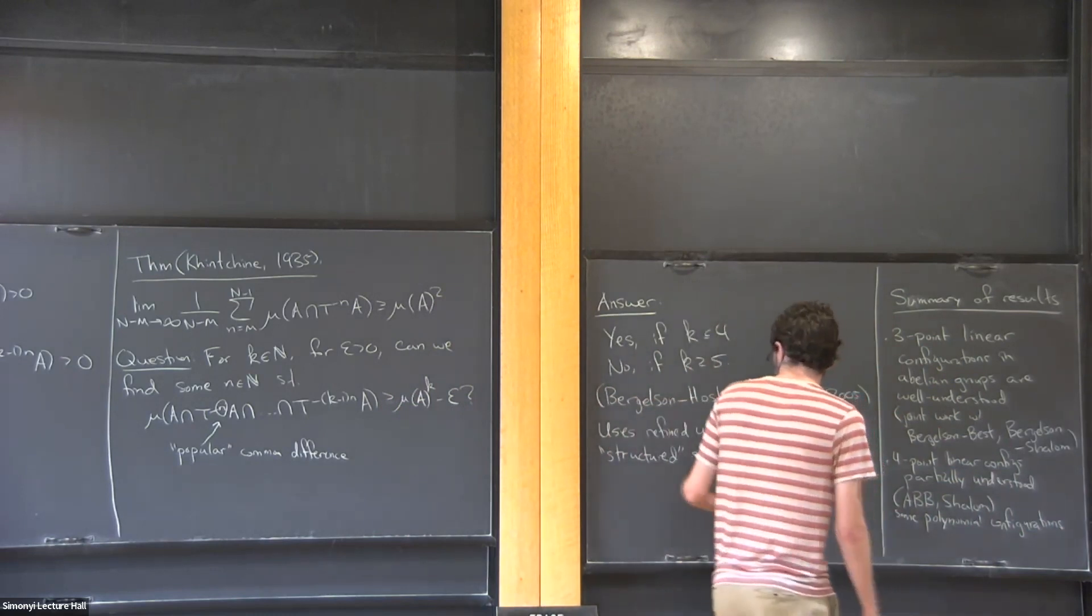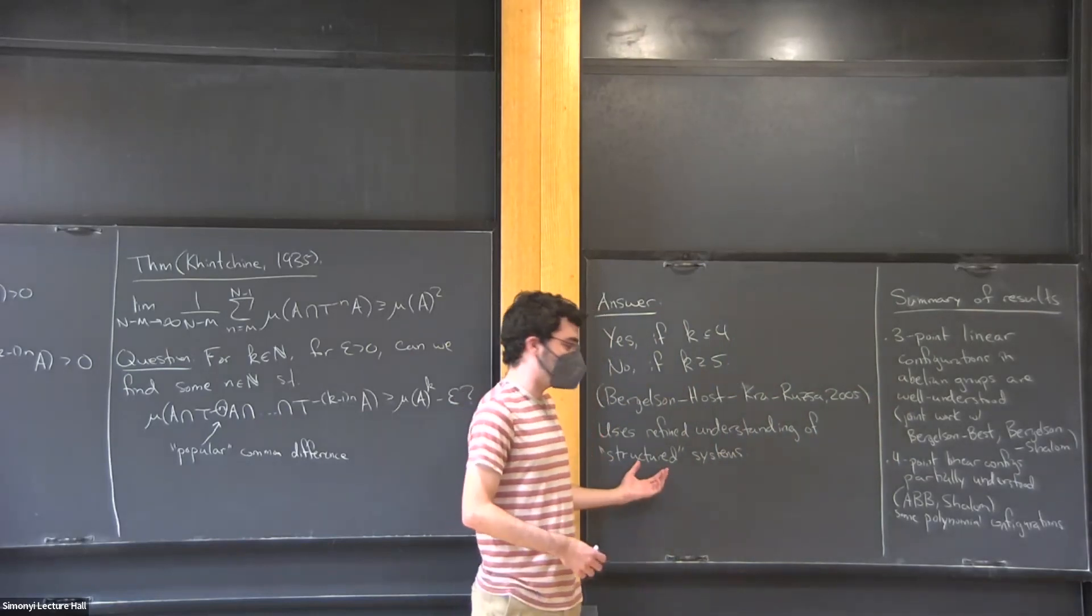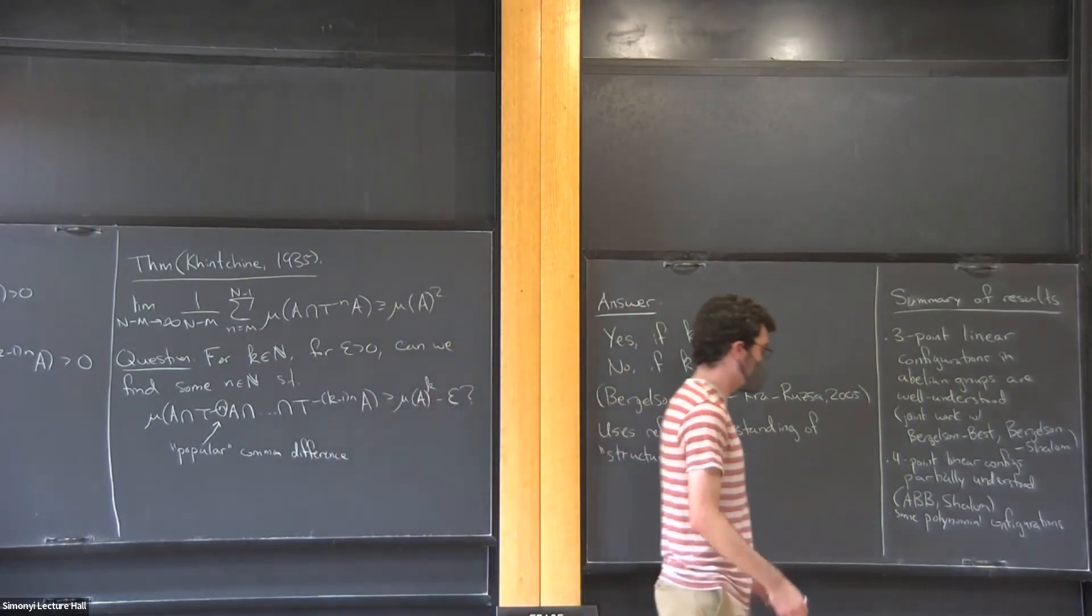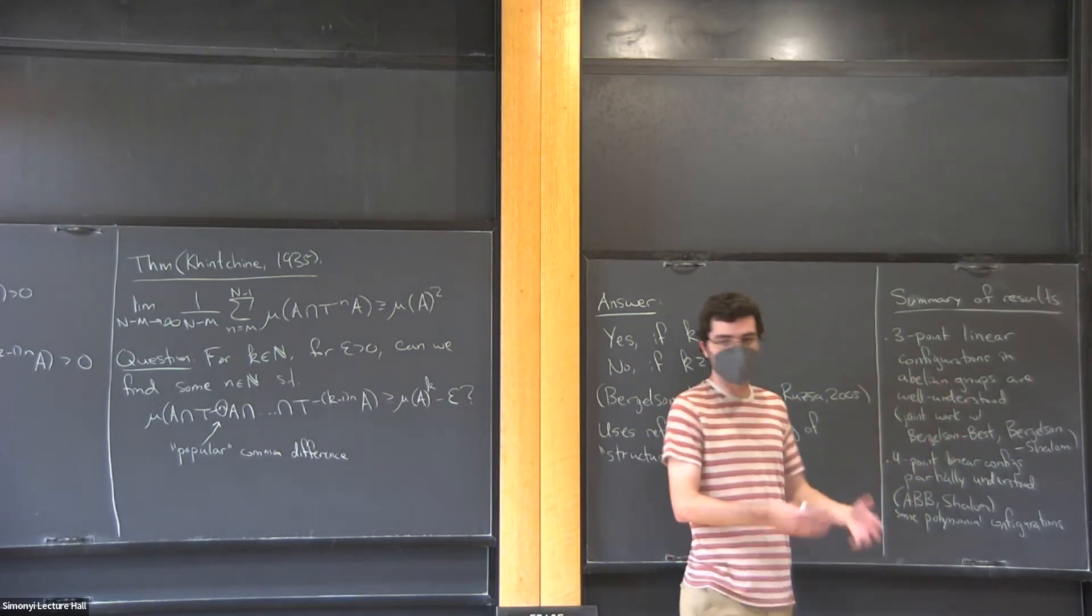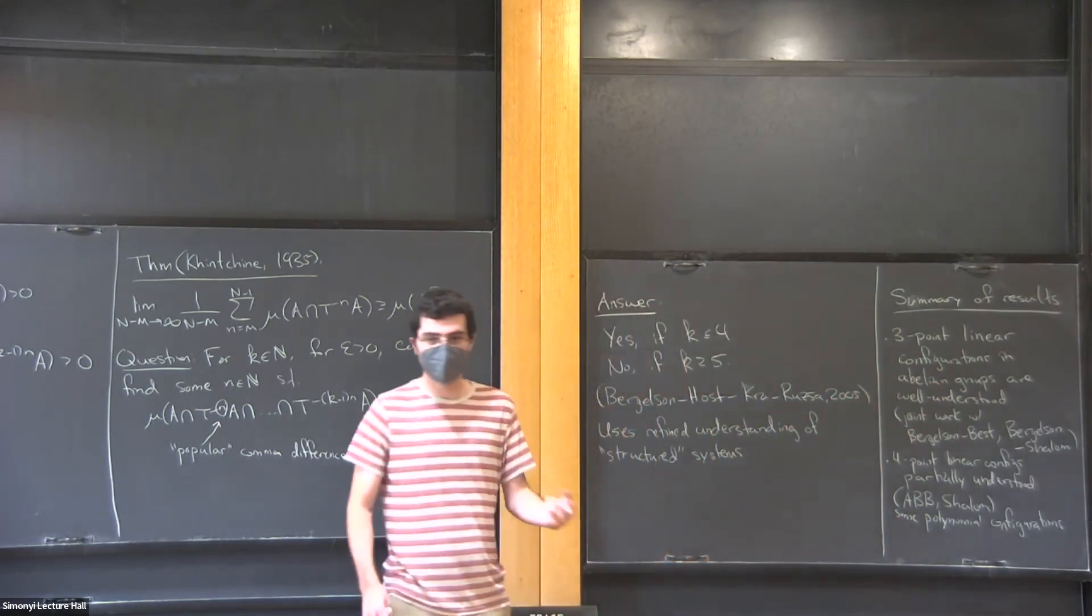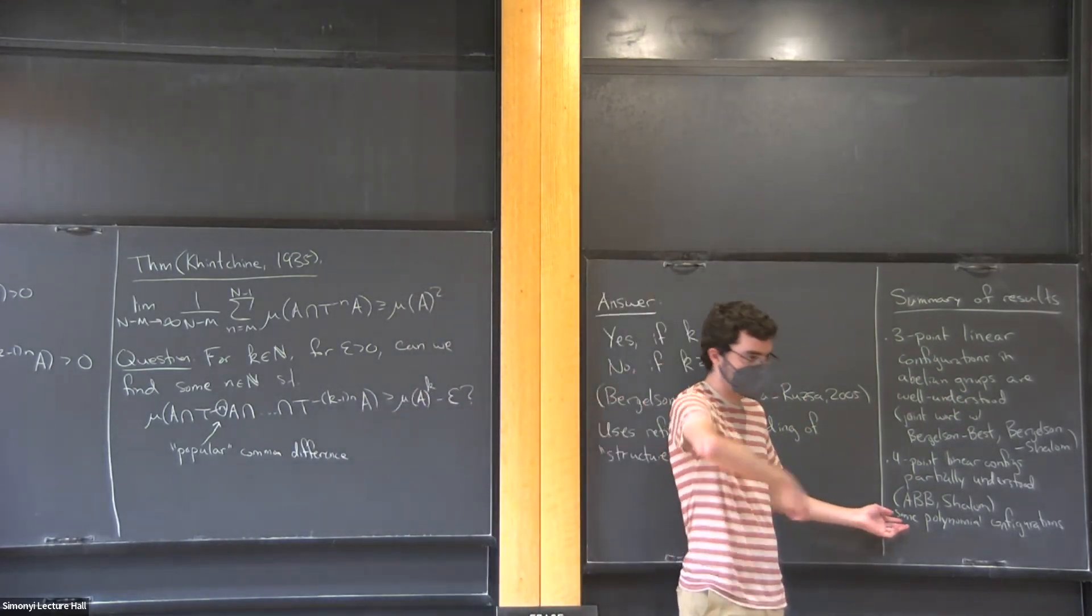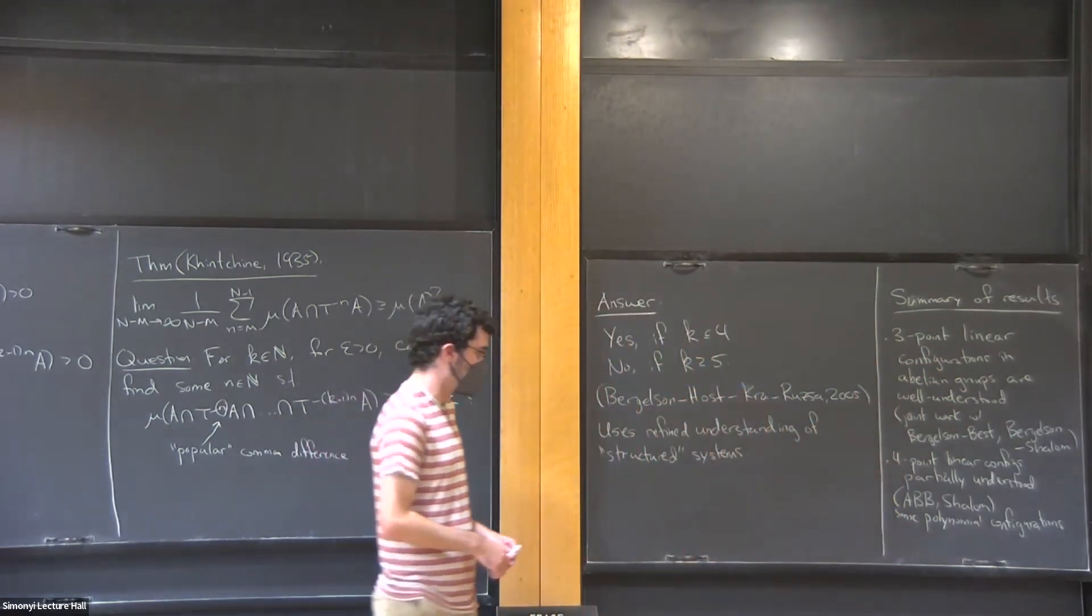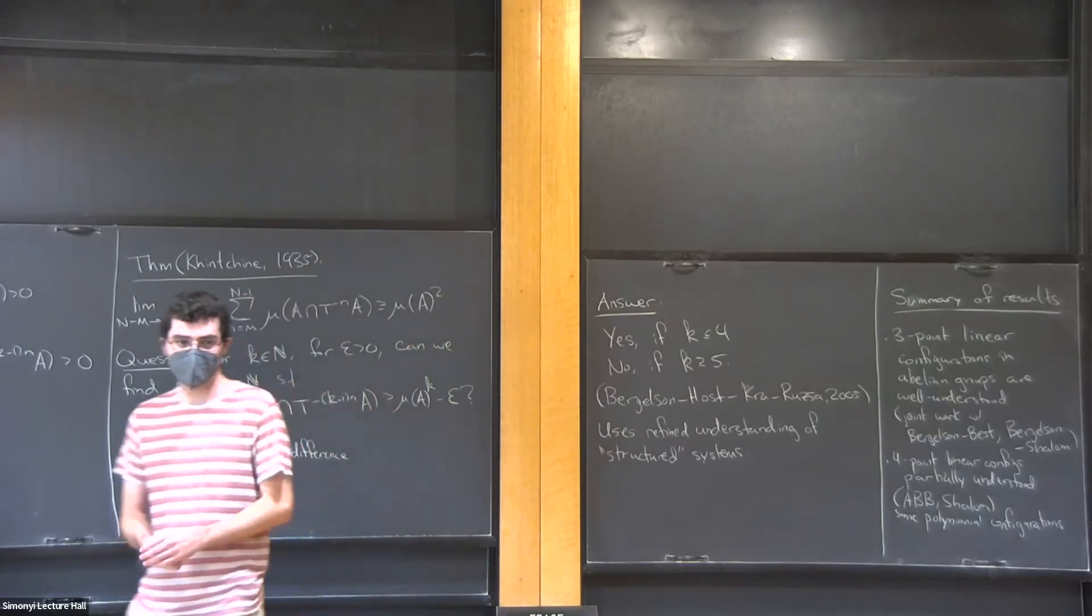And so, right now we have some good understanding of three-point configurations, a little less well understood for these longer configurations and more general ones. But, as I said, the key to understanding these is really to get a really detailed understanding of whatever these structured systems are and seeing the behavior on that level. So behind these results is some understanding of the structure of general measure-preserving actions of abelian groups. And you can get all kinds of other combinatorial content from understanding structures, general group actions, or looking not just along some linear patterns, but along polynomial patterns. And this is just some taste of what we've done in that direction. So I think I'm about at the end of my time. So I'll end there. Thank you all.